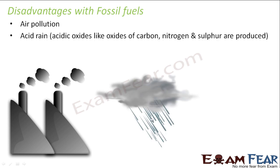Another disadvantage is acid rain. When you burn fossil fuels, oxides of carbon, nitrogen, and sulfur are produced. These are acidic oxides. When emitted into the atmosphere, they combine with rain during rainfall, and the resulting rain is known as acid rain. Acid rain is extremely harmful to life forms and also tarnishes marble and buildings, causing various diseases.